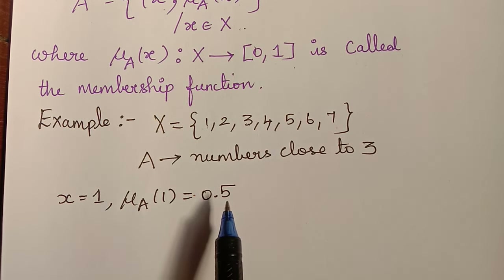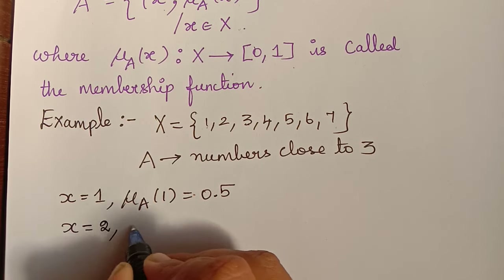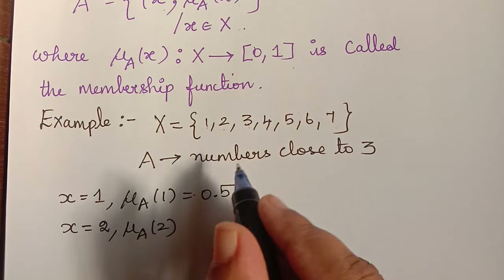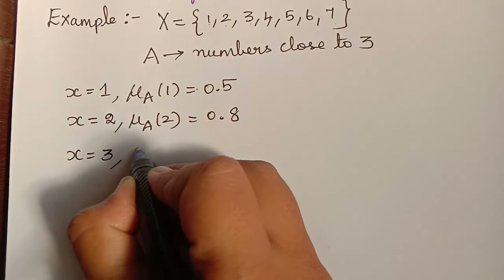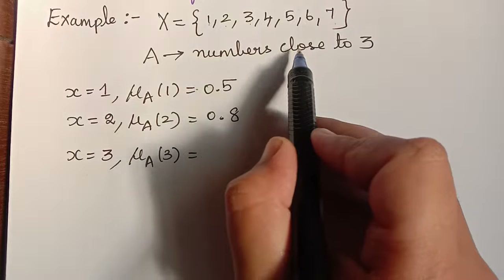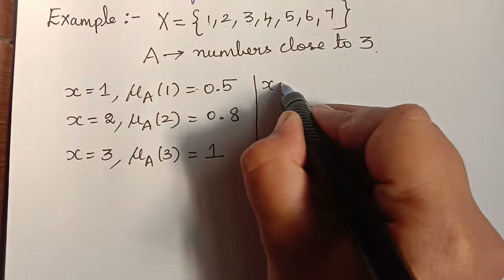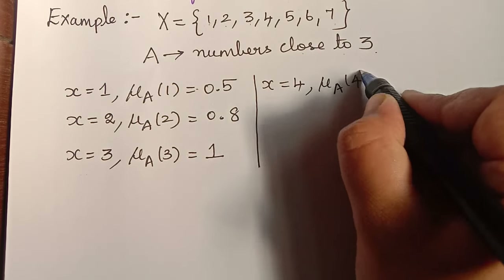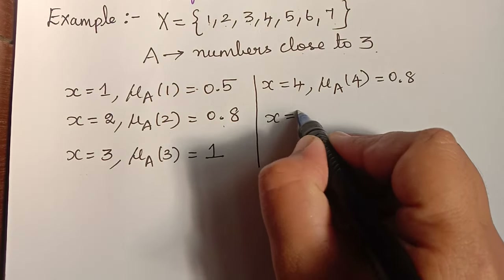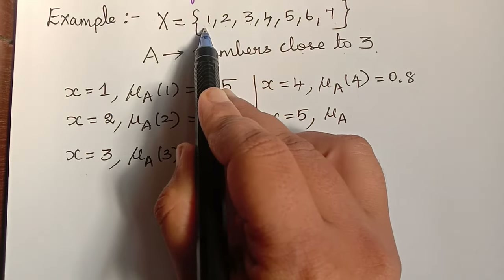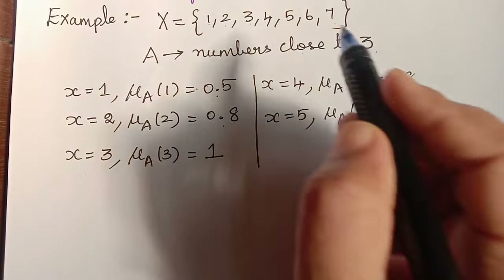The membership value may differ as per the view of the person, but not too much. For x = 2, we find that 2 is more closer to 3, so we can have the membership value to be 0.8. For x = 3 itself, the membership value is full, so it is equal to 1. For x = 4, how closer it is to 3 is the same as how closer 2 is to 3, so we take it as 0.8. For x = 5, it is the same as x = 1, so we take the membership grade as 0.5.